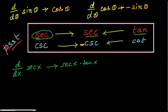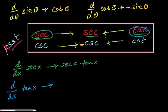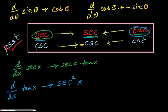Now you will do the same thing for tan x. If you need to find the derivative of tan x, go in the direction the arrow points — from tan towards sec. Sec multiplied by sec gives you sec squared x. So the derivative of tan x is sec squared x.